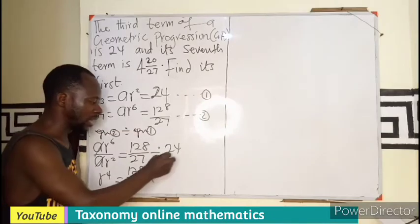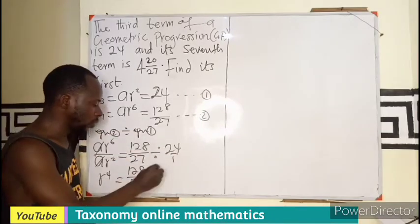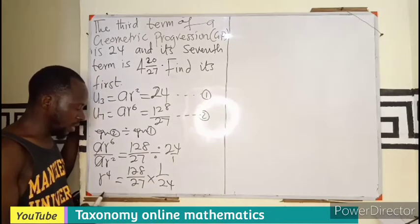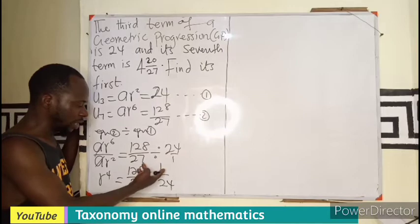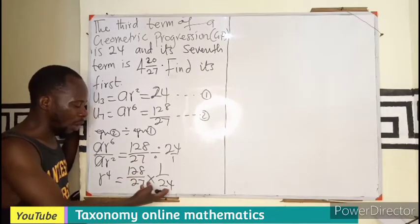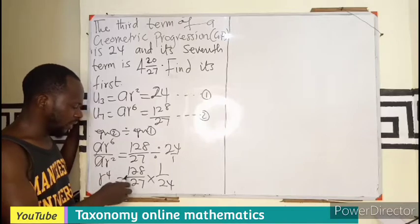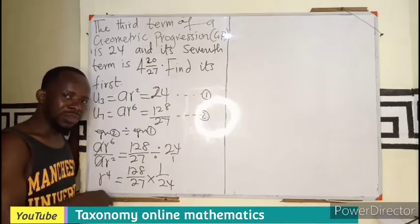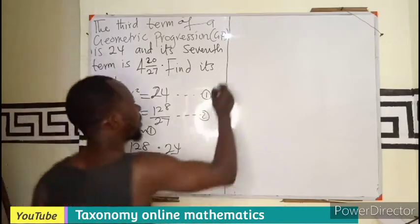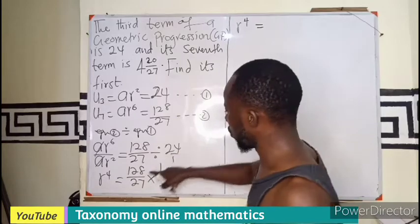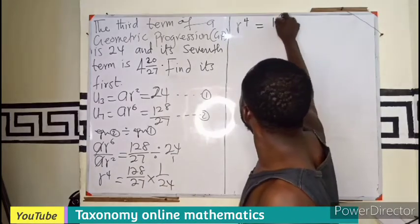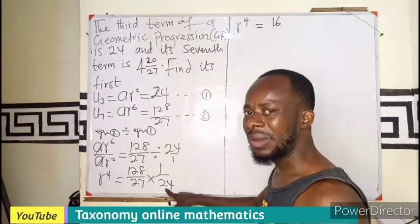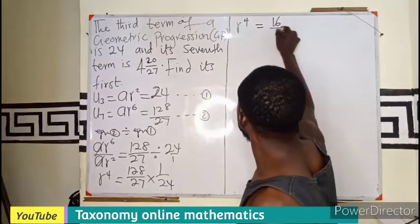That gives us ar⁴ equals to 128 over 27. We now change this to become multiplication. As I change this to multiplication, I flip the fraction. So we need to multiply this by this. There is a common factor. If I use 8, 8 will go here 1, and 8 into 48 is 16. So my r⁴ equals to 16 on the top. When 8 goes into 24 that will be 3. 3 times this is 81.